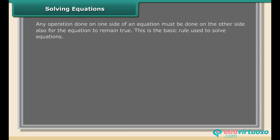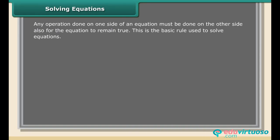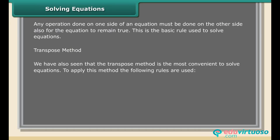Any operation done on one side of an equation must be done on the other side also for the equation to remain true. This is the basic rule used to solve equations. We have also seen that the transpose method is the most convenient way to solve equations.